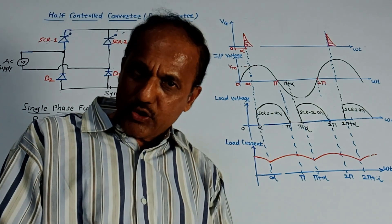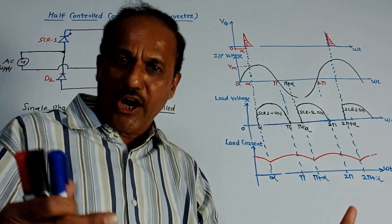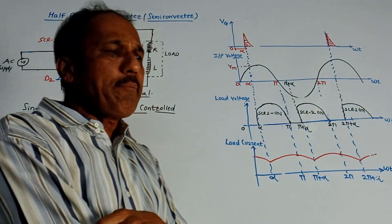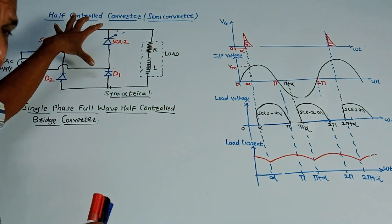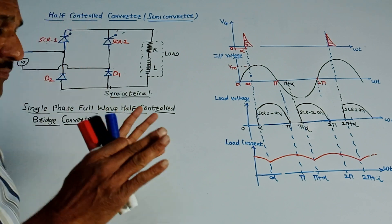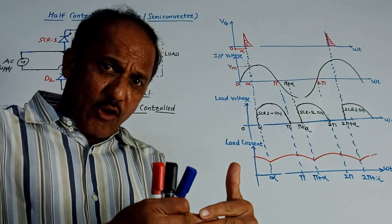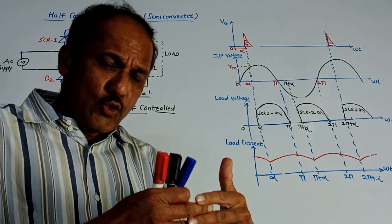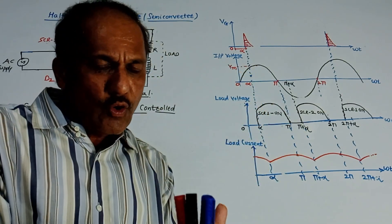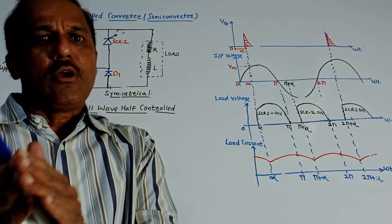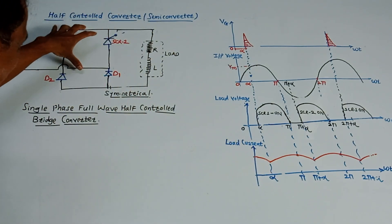These two diodes are acting as freewheeling diodes. In the first video, I told you about the function of the freewheeling diode. Due to the inherent capability of this diode to produce freewheeling action, you don't have to connect any extra diode for the freewheeling purpose. So this is the circuit diagram.